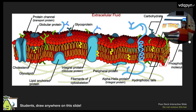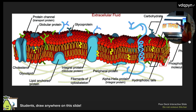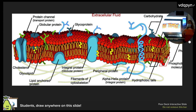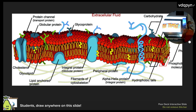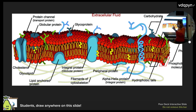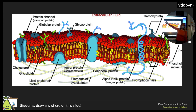Looking at the cell membrane, the proteins interspersed can function as channels, carriers, cell recognition molecules, receptors, enzymatic proteins, and junctions. There are also glycolipids and glycoproteins built out of carbohydrates — sugars — that help with cell recognition, such as MHC1 and MHC2.